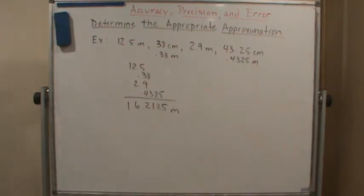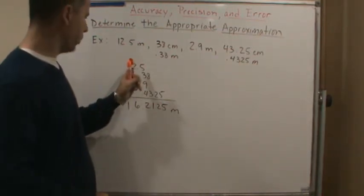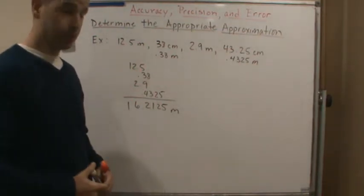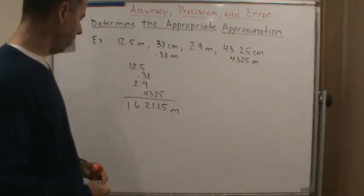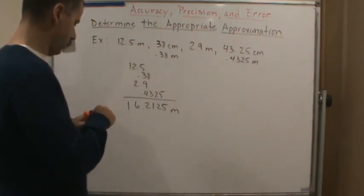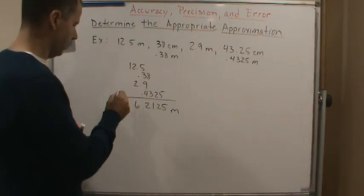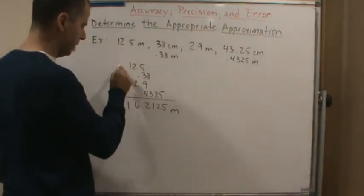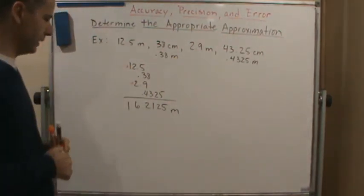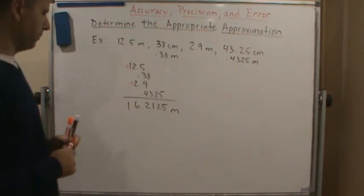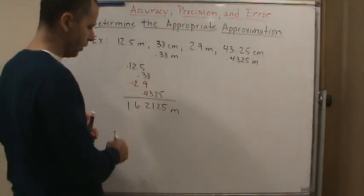Now, which one of these measurements is the least precise? Well, this one and this one measures up to a tenth of a meter. This measures up to a hundredth of a meter.